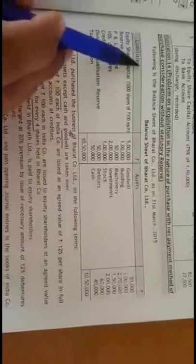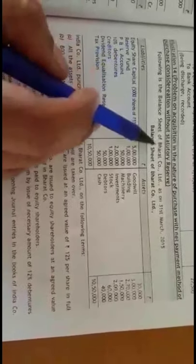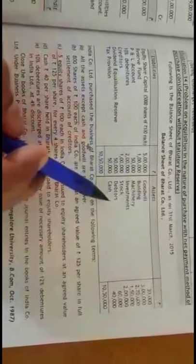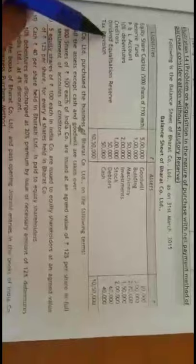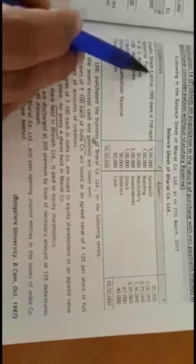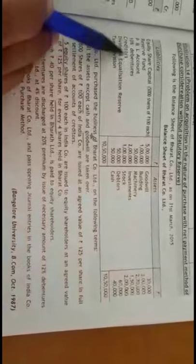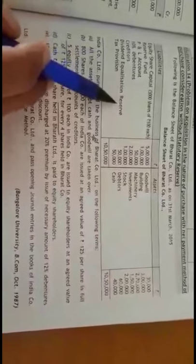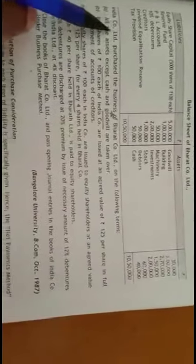I will be discussing Problem 14. The following is the balance sheet of Bharat Company Limited as on 31st March 2015. You have all these assets. On the liability side of the balance sheet, you have equity share capital, reserve fund, profit and loss account, 10 percent debentures, creditors, dividend equalization reserve, and tax provision.